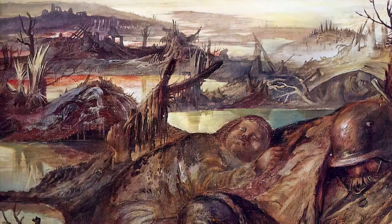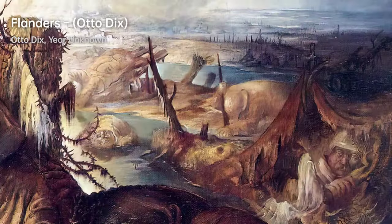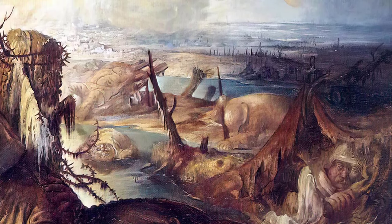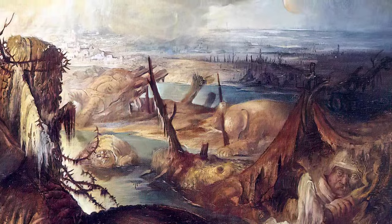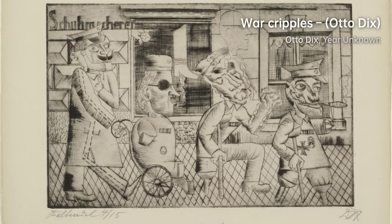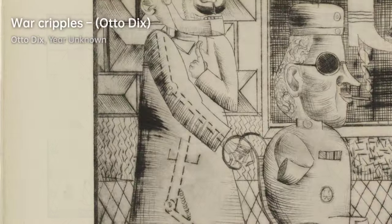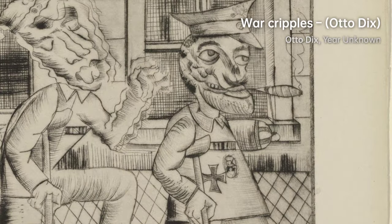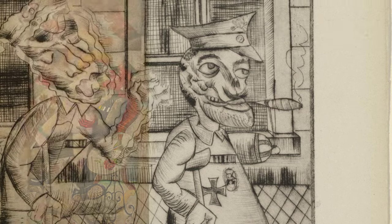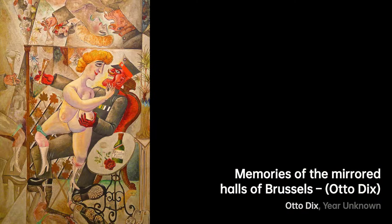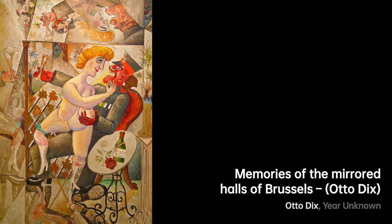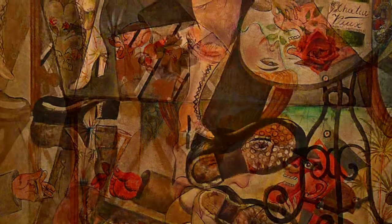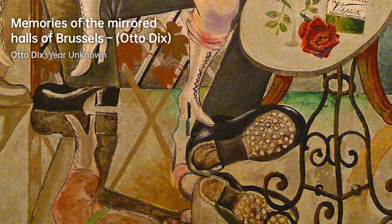Dix's artworks reflected the harsh realities of post-war Germany, exposing the corruption, poverty, and despair that plagued society. His artistic style often featured sharp lines, strong contrasts, and intense colors, capturing the grotesque and disturbing aspects of human existence. His works were characterized by their raw and unapologetic depiction of war and the human condition, making him a significant figure in the Neue Sachlichkeit movement.